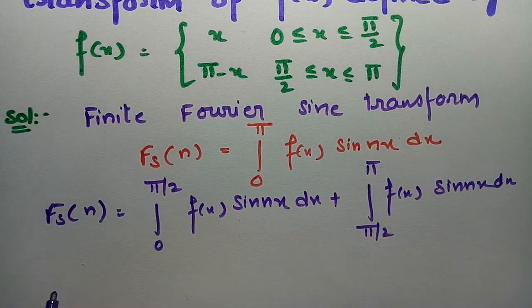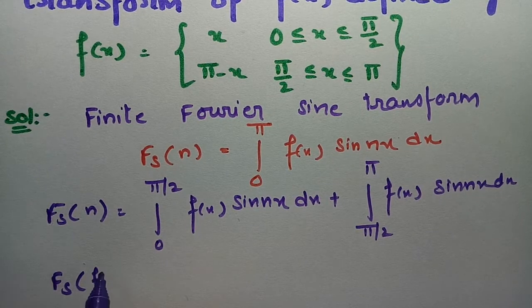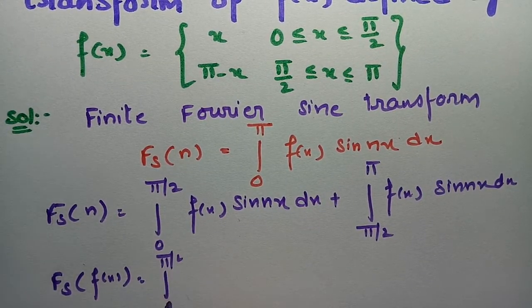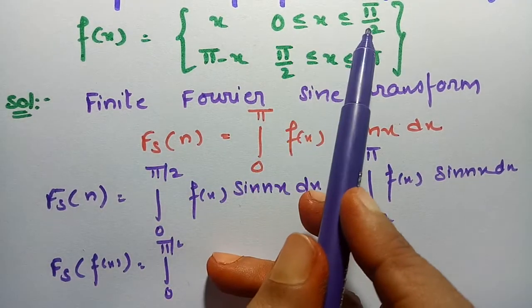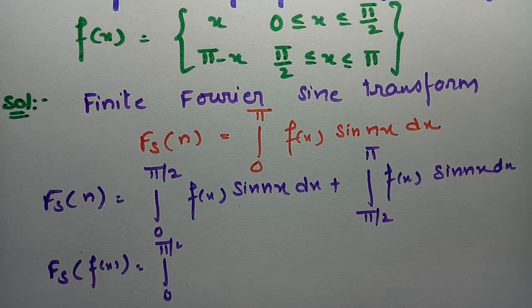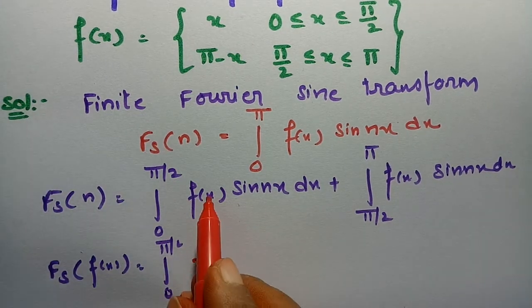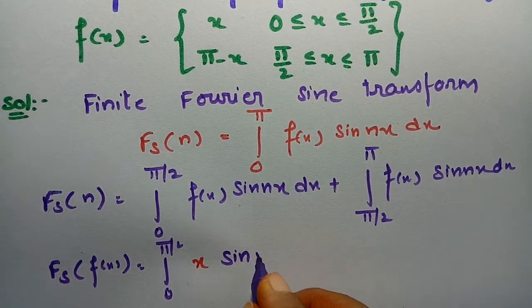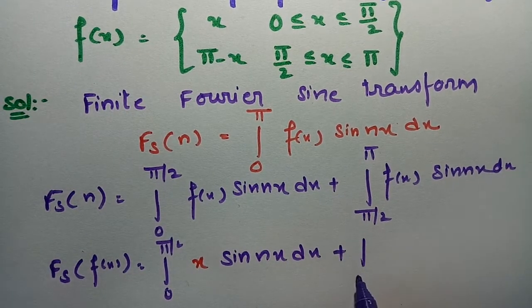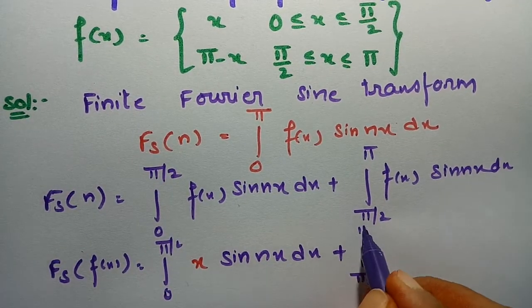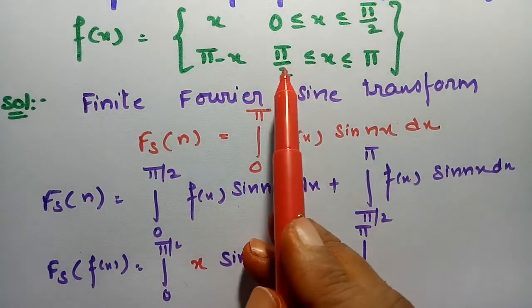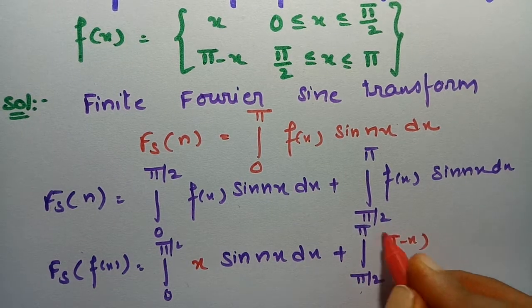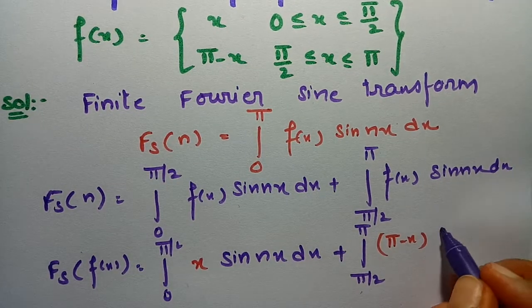Now I will substitute the values. The Fourier sine transform of f(x) equals the integral from 0 to π/2 of x · sin(nx) dx, because between 0 to π/2 the function value is x, plus the integral from π/2 to π of (π − x) · sin(nx) dx, because between π/2 to π the function value is π − x.